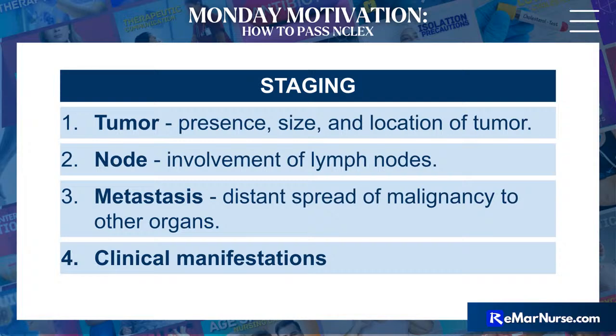As we classify lung cancer, we look at the TNM — the tumor that is there, its presence, size, and location, any lymph node involvement, metastasis, and other clinical manifestations. There are many treatment options for lung cancer, including surgery, chemotherapy, or external radiation, where a laser targets the cancer tumor to shrink its size. The treatment option will be based on the patient and what their healthcare provider suggests.